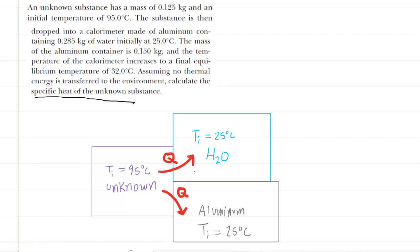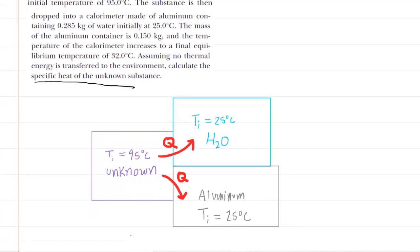We've drawn a simple diagram to show us what's going on conceptually. Because the unknown is at a higher temperature, we know that the heat is going to travel from the unknown to the water and aluminum because they are at lower temperatures. In essence, heat will travel from the warmer substance to the cooler substance.